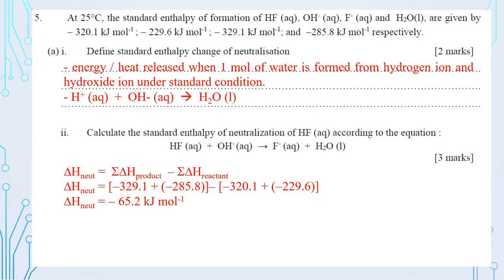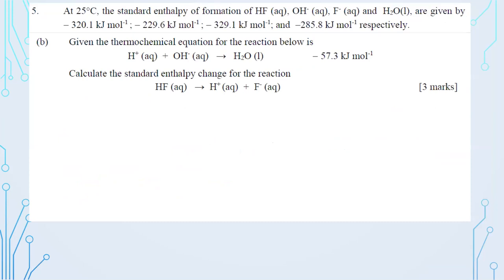For number three, given the thermochemical equation H⁺ + OH⁻ → H₂O with ΔH = −57.3 kJ/mol, calculate the standard enthalpy change for HF → H⁺ + F⁻. There is no direct information about H⁺, so you must use this equation to calculate the enthalpy change for H⁺ and then apply it to the main equation.